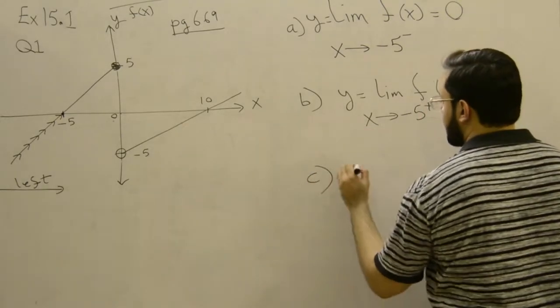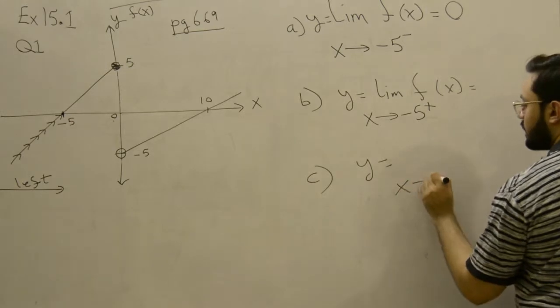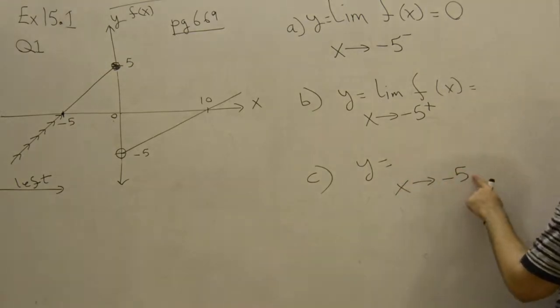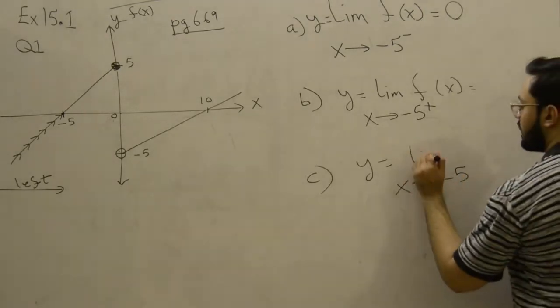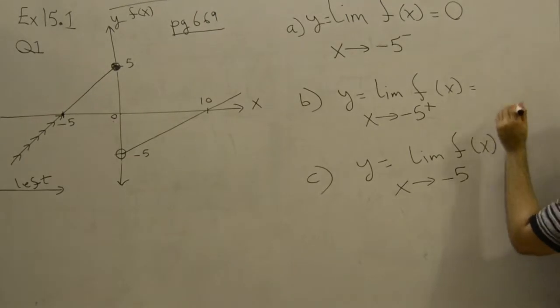Part c is asking us to find out if x is approaching minus 5 overall—they have not specified the right and the left direction. This is part c. We're going to find the answer to these questions.